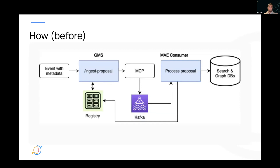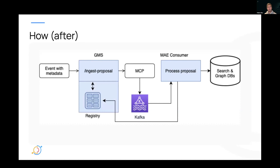From an architectural perspective, if you take the ingest proposal flow of data — which is the typical one when you want to push data into DataHub — you have some event with metadata. Under the hood, this calls an ingest proposal endpoint, which generates a metadata change proposal event stored into Kafka, and then that gets processed by our MAE consumers, which update DataHub's databases, allowing you to search and see things in the UI. In those two blue code blocks, there is a direct dependency on the registry — every time you read or write data into Kafka for DataHub, you had that requirement. Now it's part of GMS itself.